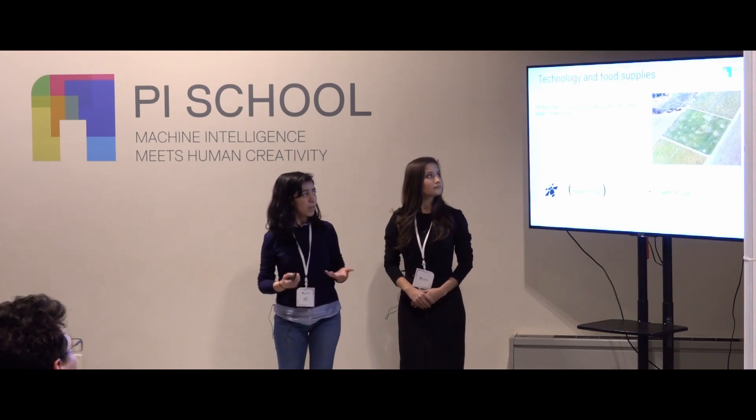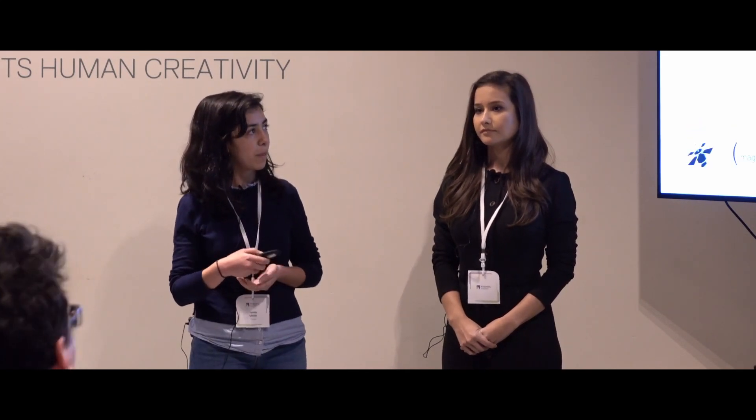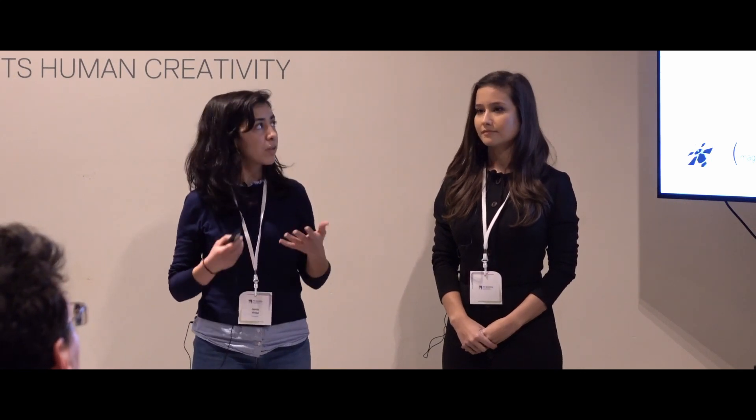We're going to present three use cases, and in the end you're going to see that from these three use cases one technology is used. Whenever a farmer feels an agricultural field is affected by disease, which happens quite often, farmers need to know as soon as possible about the health of their crops, so we use satellite images in order to predict the health of the crops.